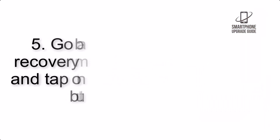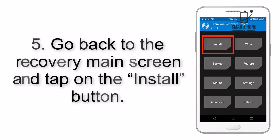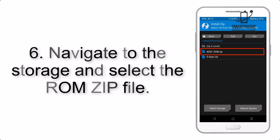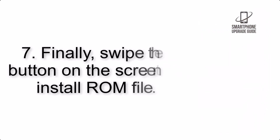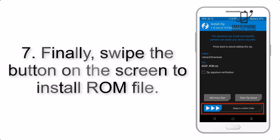Step 5: Go back to the recovery main screen and tap on the Install button. Step 6: Navigate to the storage and select the ROM zip file. Step 7: Finally, swipe the button on the screen to install the ROM file.